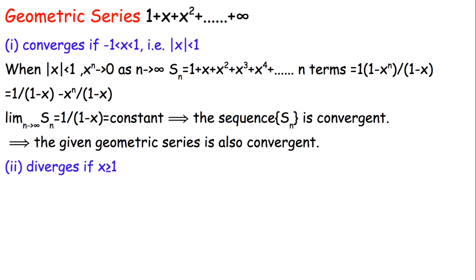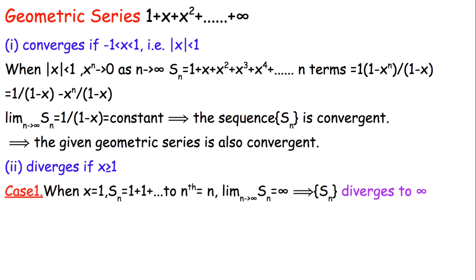Now let's consider the case when x is greater than or equal to one. In Case 1, when x equals one, the sum Sₙ equals n since there is no common ratio effect between terms. As n approaches infinity, Sₙ becomes infinite, so Sₙ diverges to infinity.